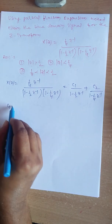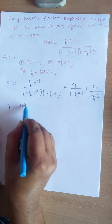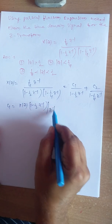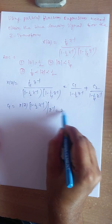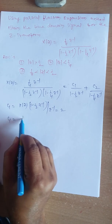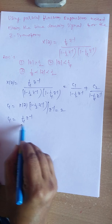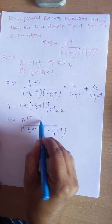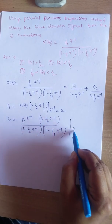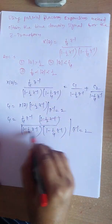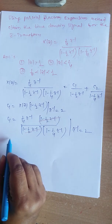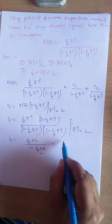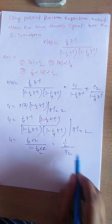To find C1, multiply X(Z) by the denominator of C1, which is (1 - 1/2 Z⁻¹), and evaluate at Z⁻¹ = 2 (setting 1 - 1/2 Z⁻¹ = 0). The (1 - 1/2 Z⁻¹) terms cancel, leaving C1 = (1/4 × 2) / (1 - 1/4 × 2) = (1/2) / (1/2) = 1.